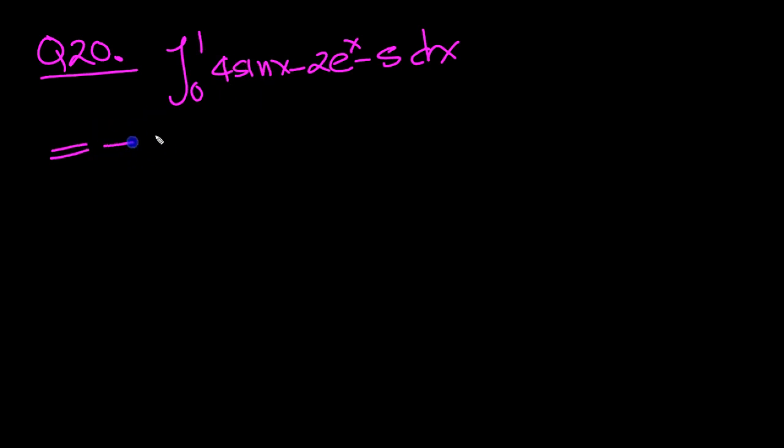Integral of sine is minus cos, so it's minus 4 lots of cos x. e to the x integrates to e to the x, so it's minus 2 lots of that. A constant integrates to a constant times x, so that's 5x, minus 5x.